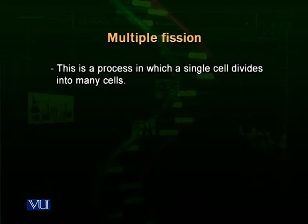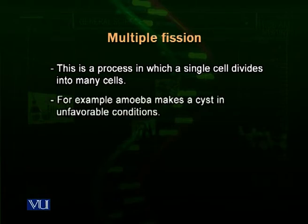Next we talk about multiple fission — more than one division, actually many divisions. Multiple fission is a method adopted by some unicellular organisms where a single cell divides into many cells. It mostly occurs during unfavorable conditions. For example, in amoeba, when unfavorable conditions arise, the amoeba converts itself into a cyst — a very hard structure that protects it from harsh environmental changes. Inside the cyst, the nuclei divide by mitosis into many nuclei: one nucleus divides into two, two into four, and so on.